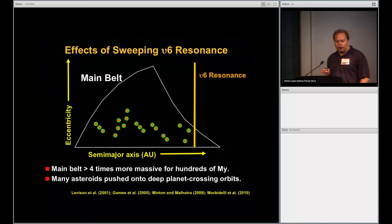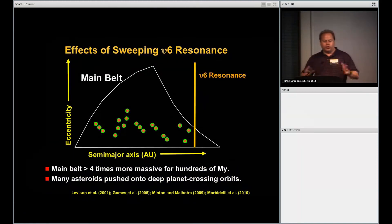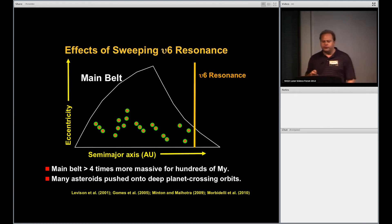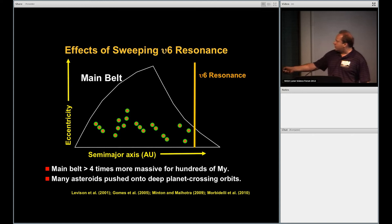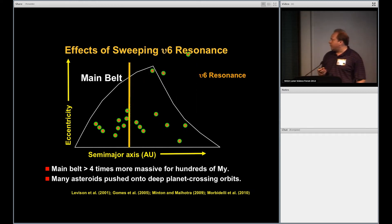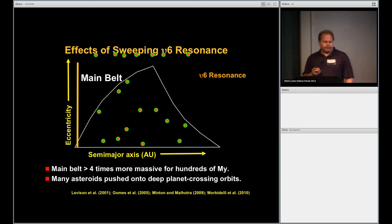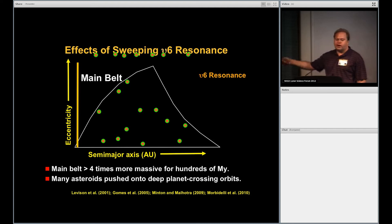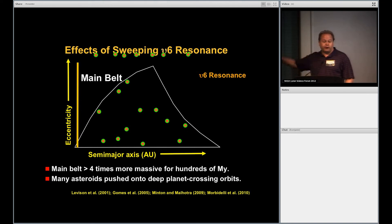There's something else that happens as well. When the giant planets move to their current orbits at this early time, hundreds of millions of years after the solar system forms, all the resonances associated with them also move to their current positions. There's a particular secular resonance called the Nu-6 Secular Resonance, which moves across the main belt, and it starts to excite the asteroid belt. It actually scatters a lot of material out of the main belt. According to the best estimates we have today, we think the main belt was actually about four times more massive than it is now. Then the resonances swept across and chased a lot of asteroids into a position where they could hit the moon. The Late Heavy Bombardment is some combination of comets and asteroids; we're going to focus on the asteroid component here.